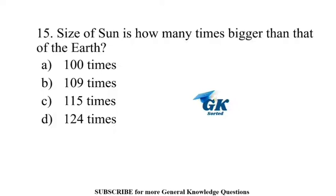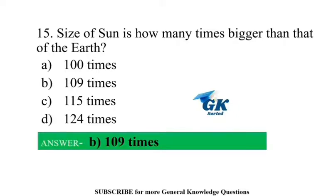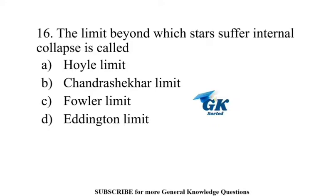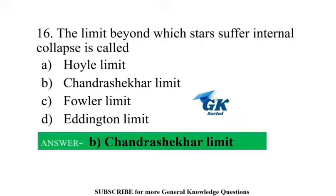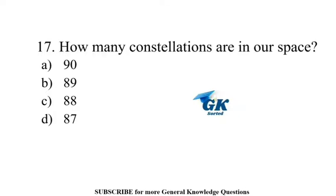The size of Sun is how many times bigger than that of Earth? 109 times. The limit beyond which stars suffer internal collapse is called the Chandrasekhar limit. How many constellations are in our space? 88.